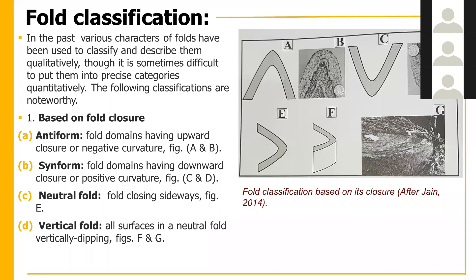Similarly, figures C and D are examples of a synform. Figure E is a neutral fold because it is oriented sideways — so this is a neutral fold. Then we have a vertical fold: if vertically dipping surfaces are present, like figure F, then it is a vertical fold.